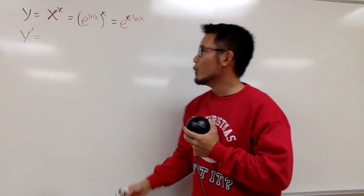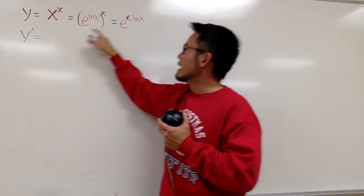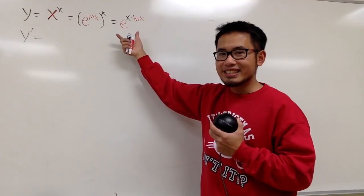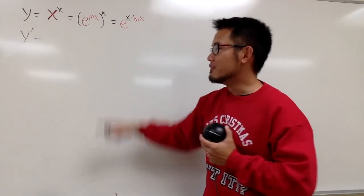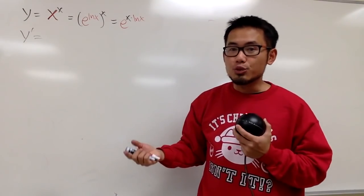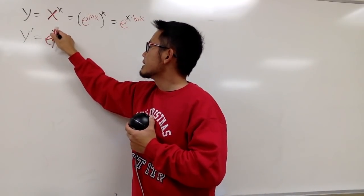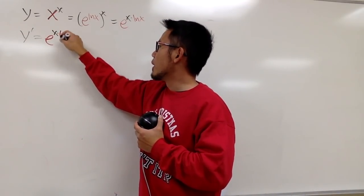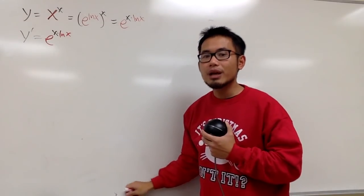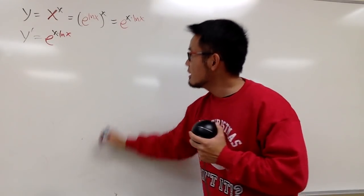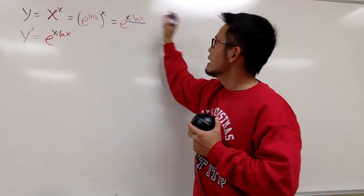And now, we are looking at x to the x as e to the x times ln x and differentiate. We know the derivative of e to the something is first, it repeats itself. So, we write this down. e to the x times ln x power, like that. And next, we have to use the chain rule. Meaning, we have to differentiate this part.